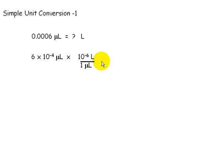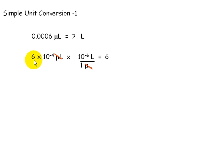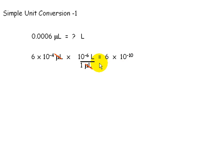We now put an equal sign. We can now cancel out the unit microliters. This answer now becomes 6 times 10 to the power of negative 4 plus negative 6. When they're both on top, we add them — that becomes 10 to the negative 10th. The unit that remains now is liters, and that's the unit that we wanted, so we're finished.